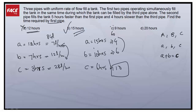The answer is Option B, 15 hours. This is the easiest way to solve this problem — rather than setting up 1/A plus 1/B equals 1/C algebraically, just going from the options is the most efficient approach.